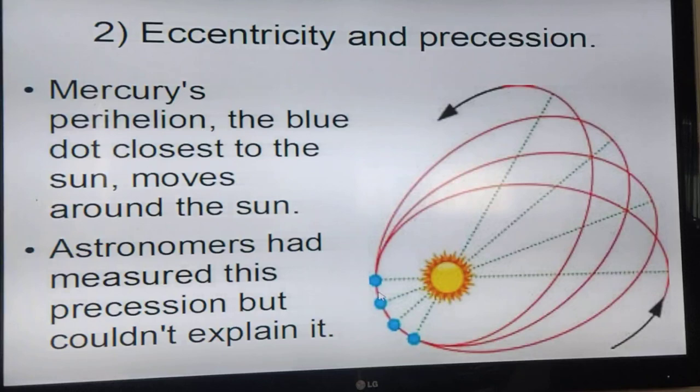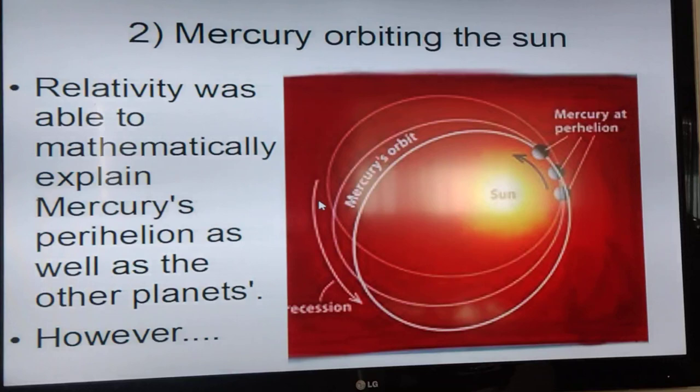The point closest to the sun kept moving. Newtonian mechanics couldn't explain it. Relativity was able to mathematically explain why the perihelion, where Mercury was closest to the sun, seemed to move.